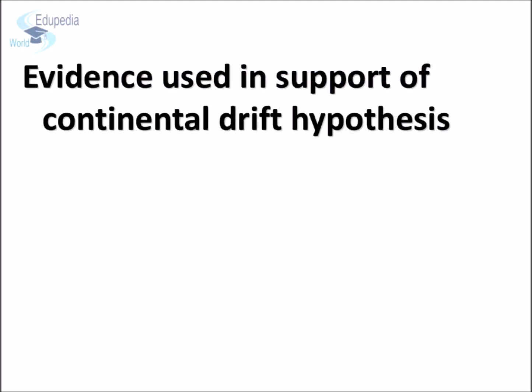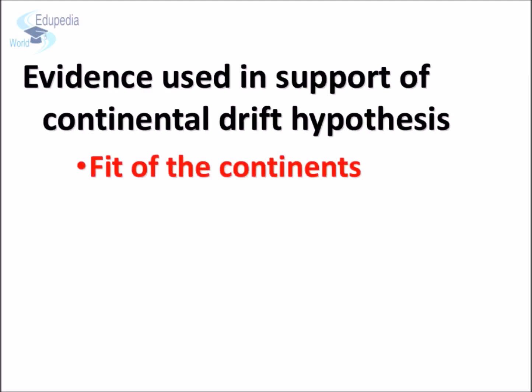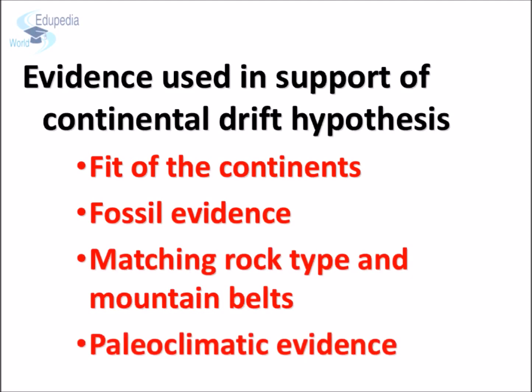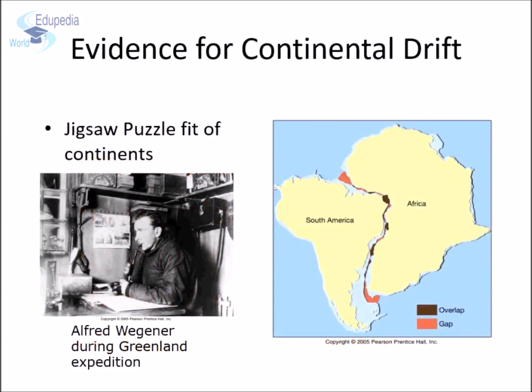Every theory has to be supported with evidences. Alfred Wegener used the following evidences to support his theory: the jigsaw puzzle fit of our continents, the fossil evidences, the matching rock types and mountain belts in different continents, and the paleoclimatic evidences. Let's look at each of Alfred Wegener's evidences. Evidence No. 1 — the jigsaw puzzle fit of continents.